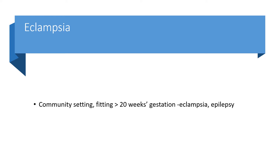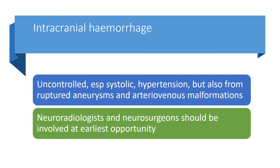Eclampsia: if a patient is over 20 weeks pregnant and has a seizure, the first differential to consider is eclampsia, though it could also be epilepsy. These patients need urgent inpatient treatment. Intracranial haemorrhage is associated with uncontrolled, especially systolic, high blood pressure, but can also result from ruptured aneurysms and arteriovenous malformations. Neuroradiologists and neurosurgeons should be involved at the earliest opportunity in managing pregnant patients with intracranial haemorrhage.